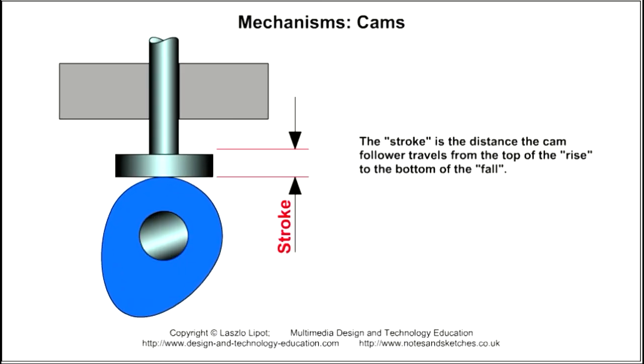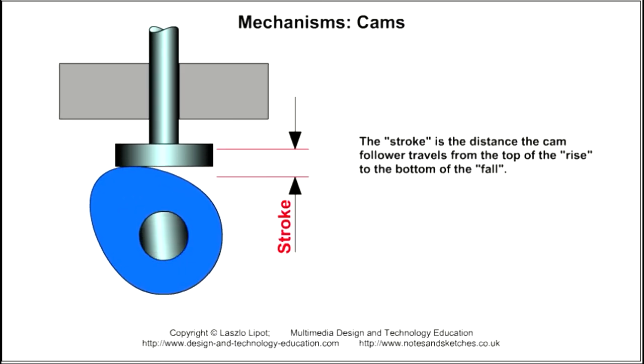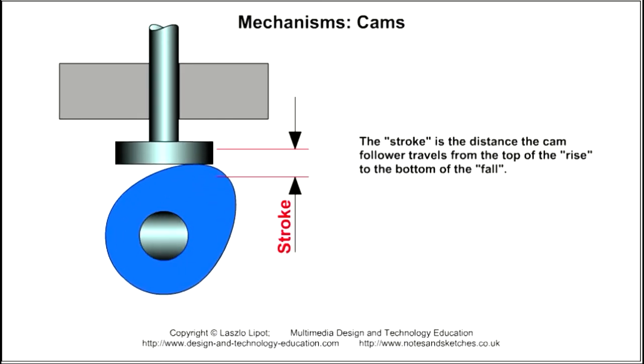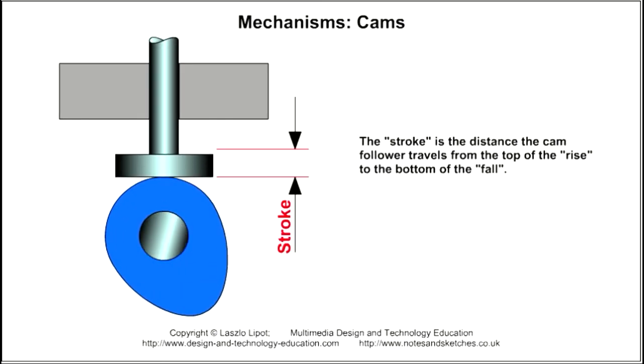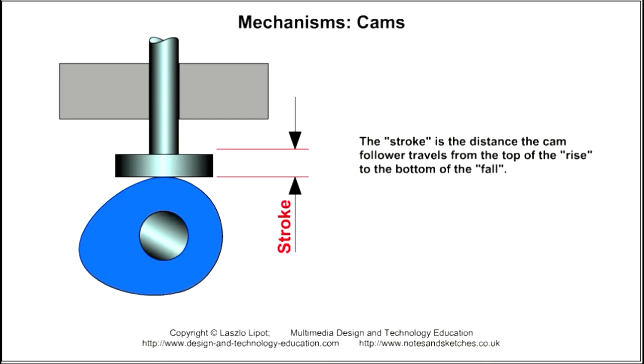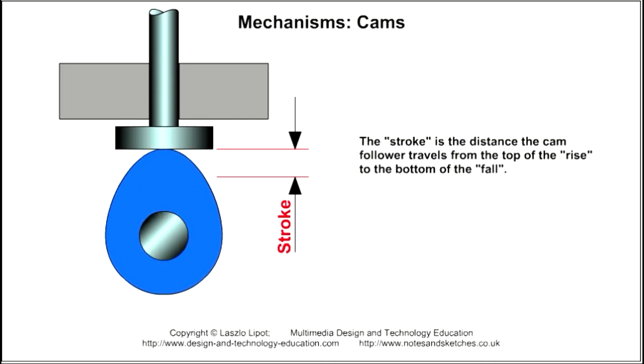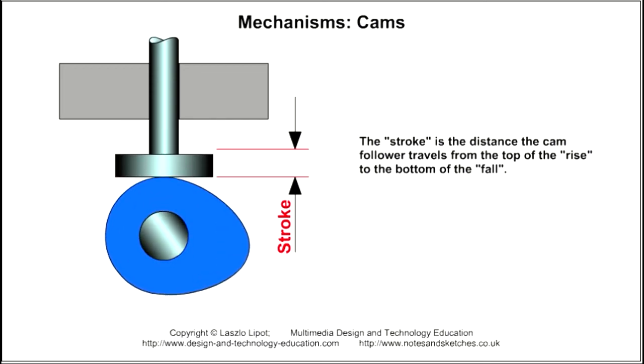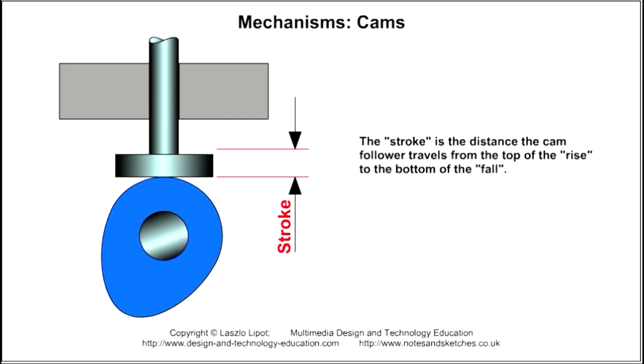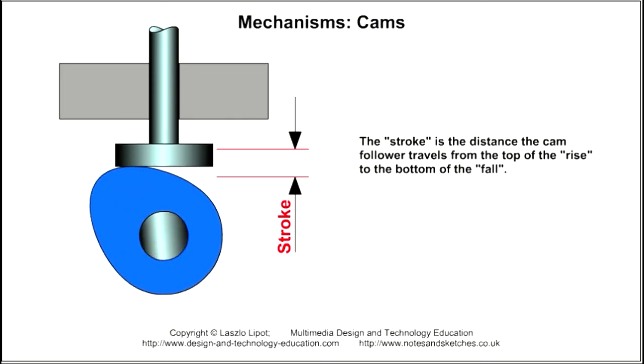The amount that the cam follower rises and falls is called the stroke. The stroke is the distance the cam follower travels from the top of the rise to the bottom of the fall.